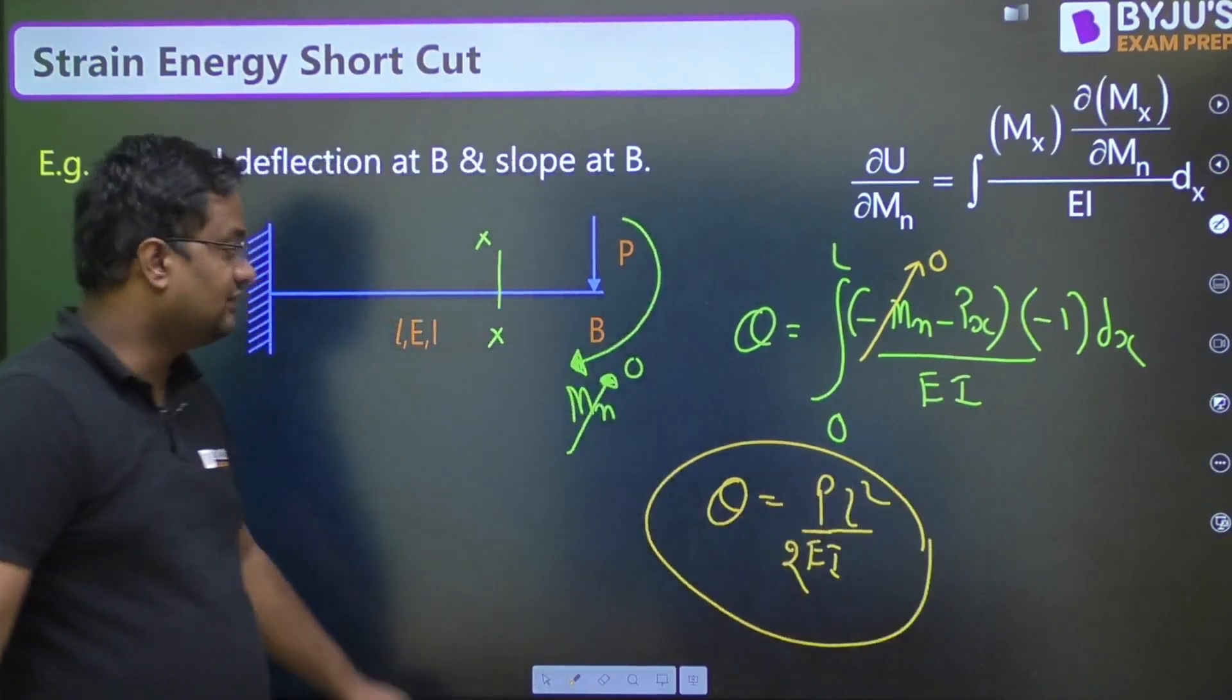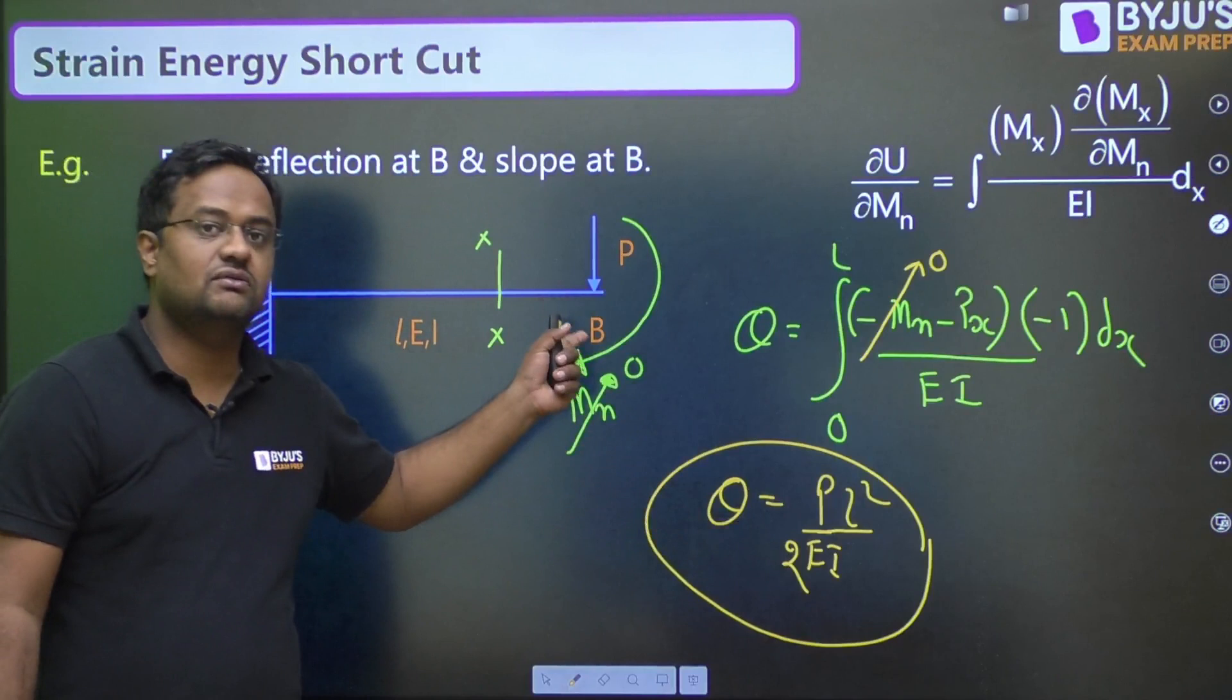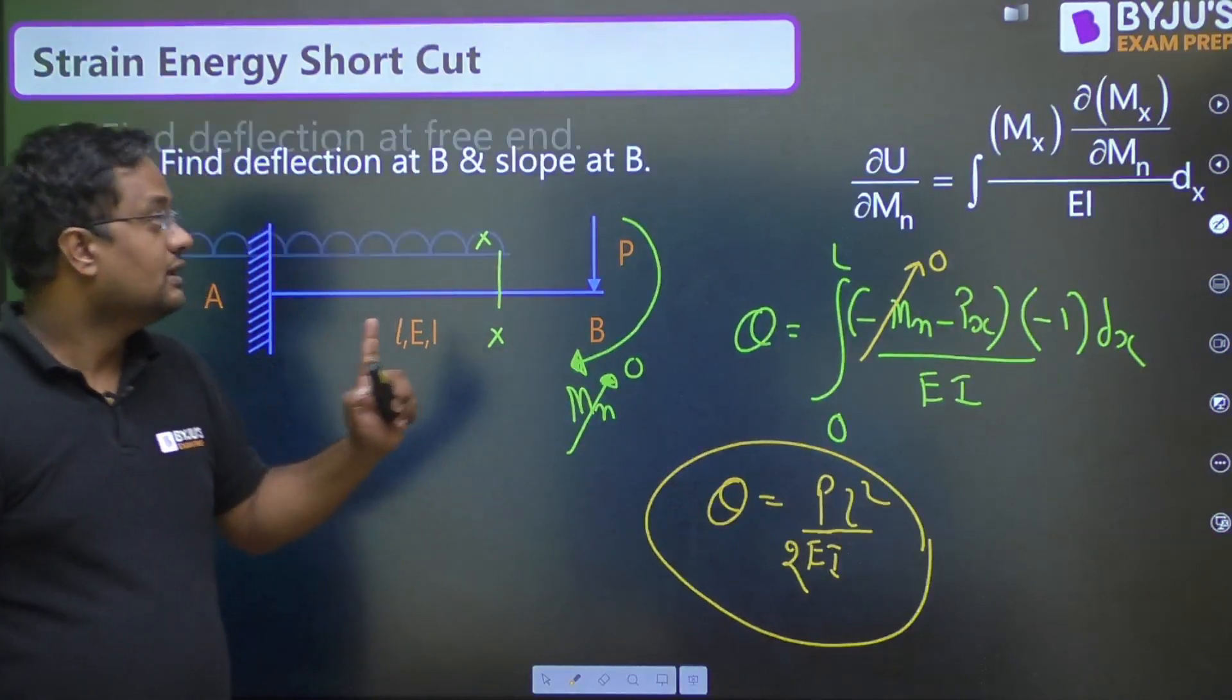And direction, since it comes positive, direction will be same as this clockwise. If it comes minus, then direction will be reverse. Now, suppose this take one more question.